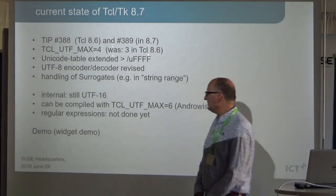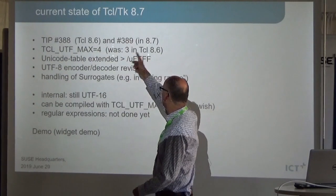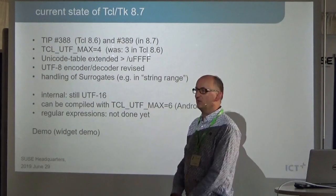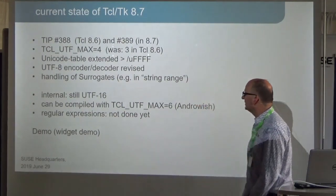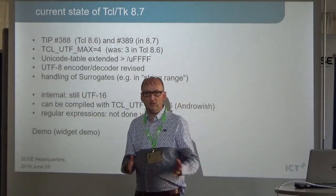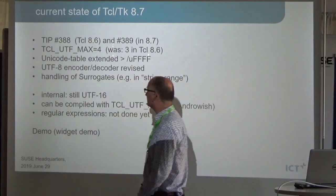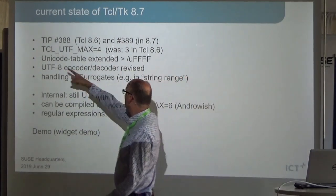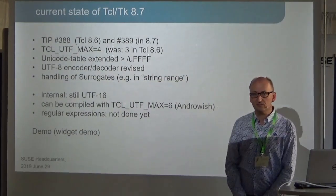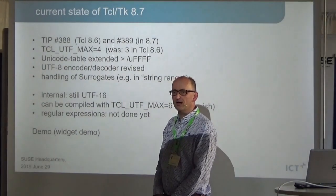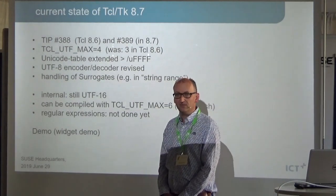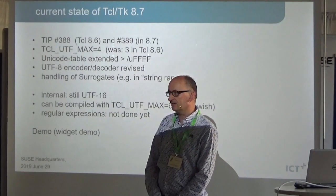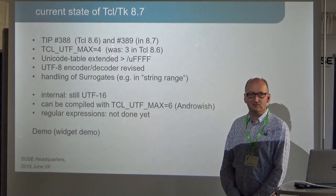There are two TIPs already handled: 388 for Tcl 8.6 and 389 done in 8.7, and that's already a big step toward getting emoji and every fancy Unicode character into Tcl. There is a variable you can compile Tcl with — TCL_UTF_MAX. In 8.6, UTF_MAX had the value of 3, meaning it can handle a maximum of 3-byte Unicode characters. If a character is higher than that, Tcl 8.6 simply doesn't recognize it and says it's invalid UTF-8, splitting it into bytes — which is totally the wrong way to handle it.